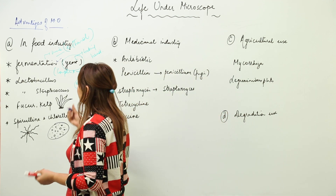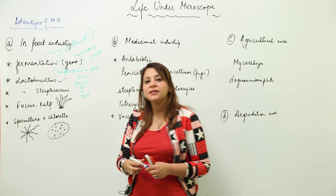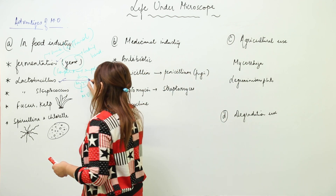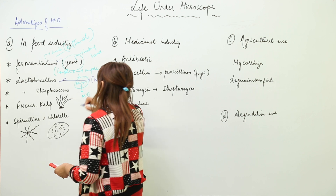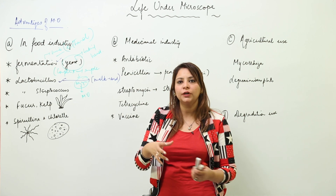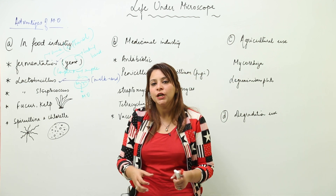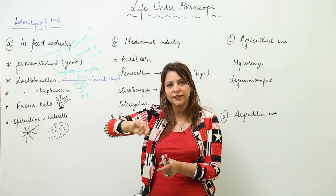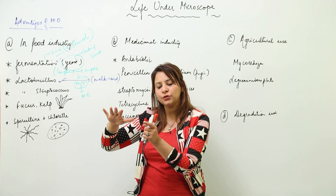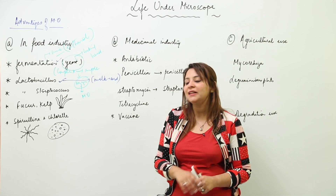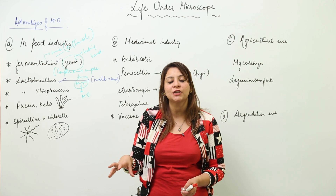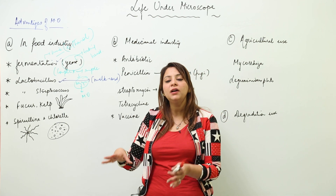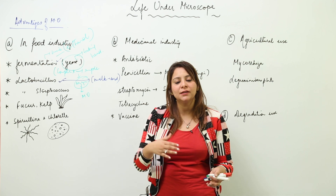Second, in the food industry, you are familiar with Lactobacillus. Lactobacillus is a bacterium that can convert milk into curd. When you want curd, you heat the milk slightly, add a spoon of curd, stir it, and keep it aside in a warm condition. The Lactobacillus bacteria convert the lactose sugar in milk into lactic acid, giving us curd.